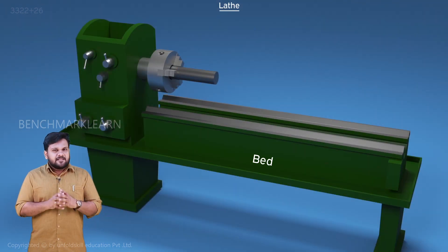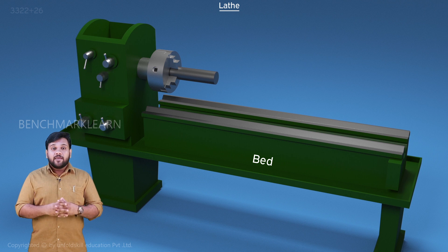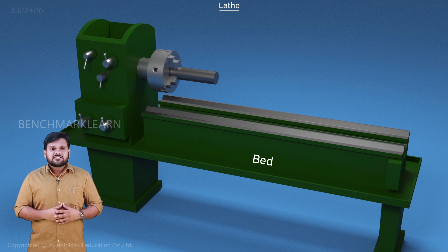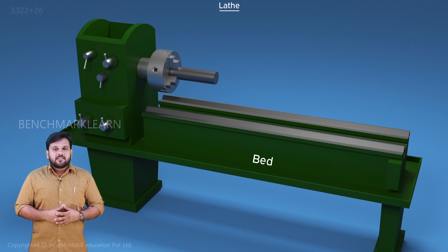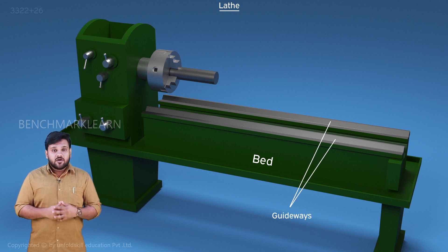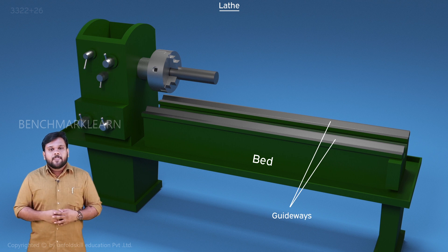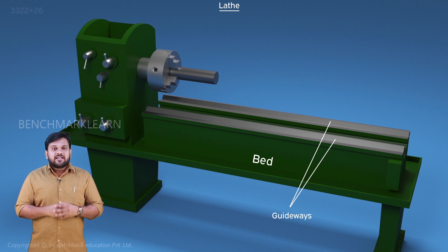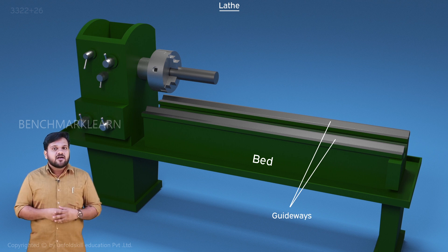The bed is the foundation or base of the lathe and it has a convenient height. The bed provides sufficient strength, rigidity, and support to the machine. The top of the bed is made into straight and smooth pathways called guideways. The headstock, tailstock, and carriage are mounted on the bed; the carriage and tailstock slide on these guideways. The bed is very heavy and made of cast iron to absorb vibrations.